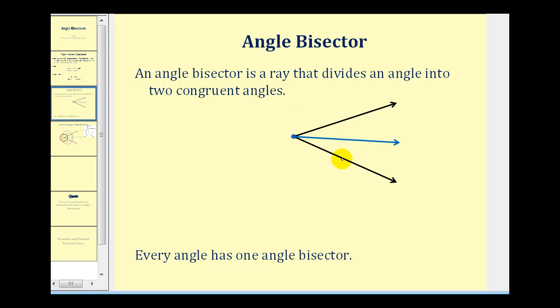In this diagram here, if we look at the angle formed by the two black rays, the blue ray would be the angle bisector because it divides the black angle into two congruent angles. So if the blue ray is the angle bisector, angle one and angle two would be congruent angles, which remember means they would be equal in measure. And every angle has exactly one angle bisector.